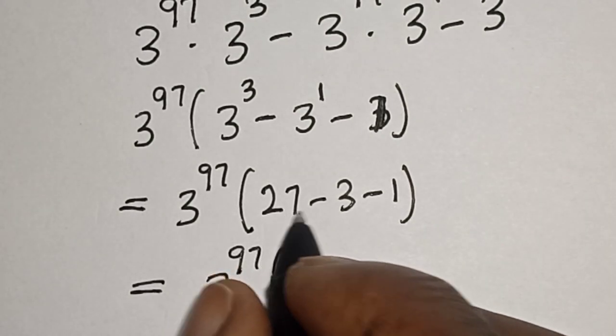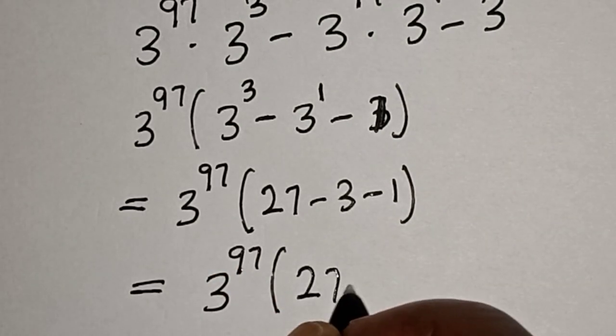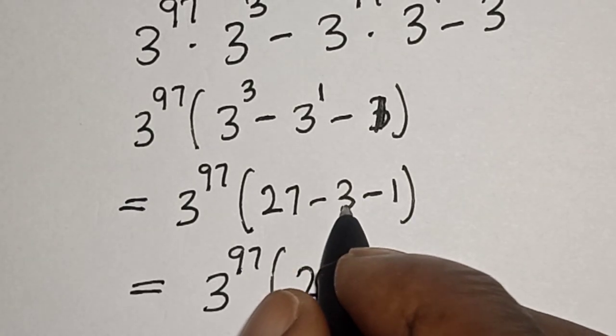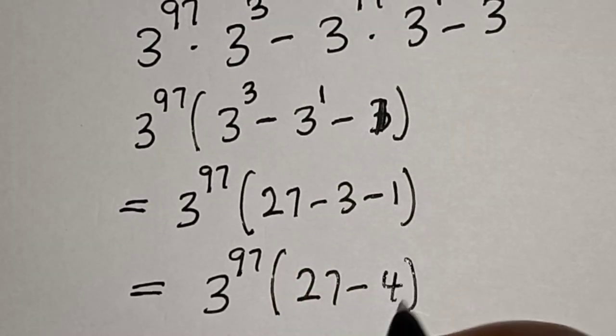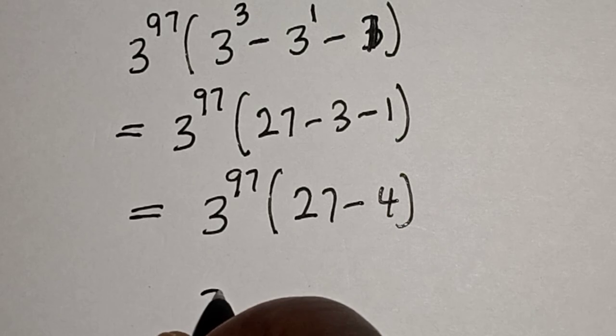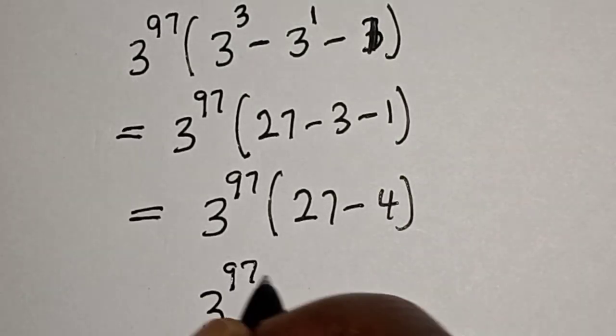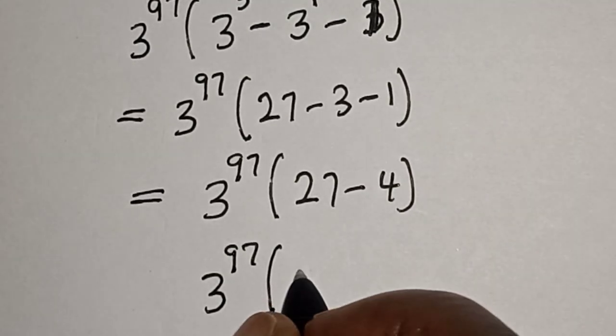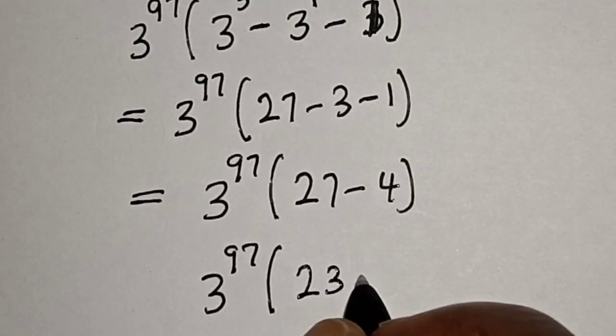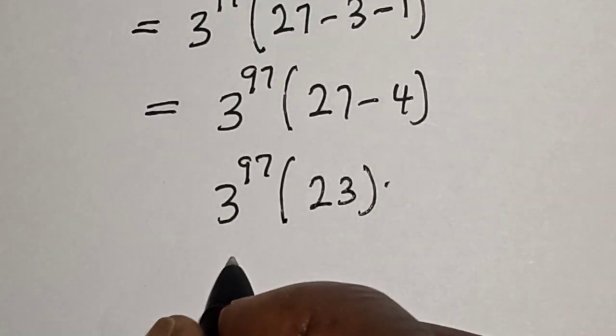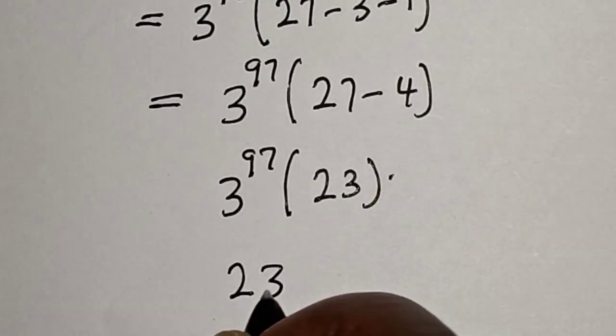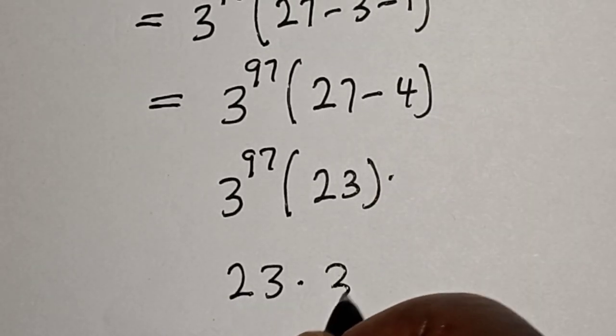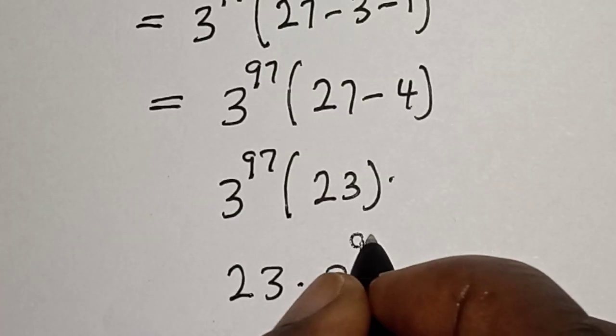This is equal to 3 to the power 97 bracket, 27 minus 3 minus 1 that will be 4, then 3 to the power 97 bracket 27 minus 4, that is 23. And our final answer is 23 multiplied by 3 to the power 97.